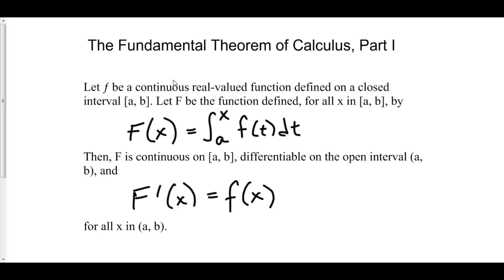What FTOC Part 1 does is combine both the integral and the derivative. It tells us that they are opposites — that if you go in the derivative direction, you're going down the ladder, but in the integral direction, you're going up the ladder. This is a major theorem in calculus.